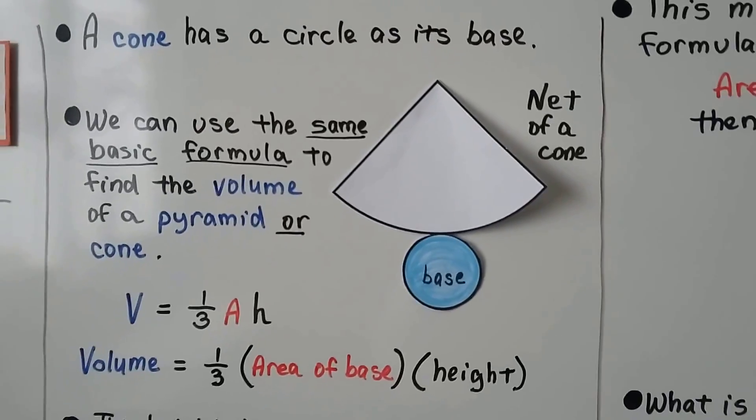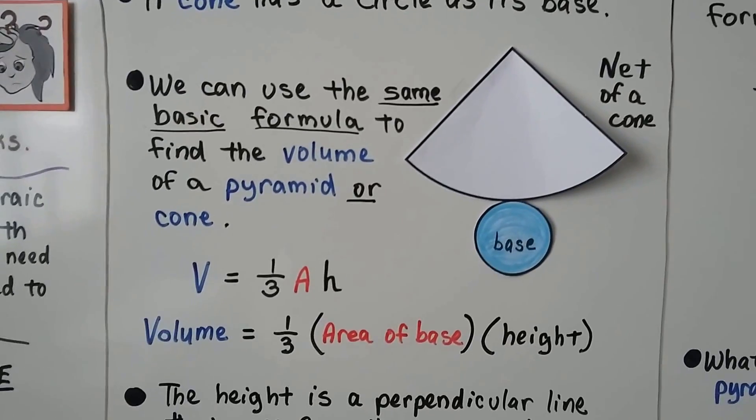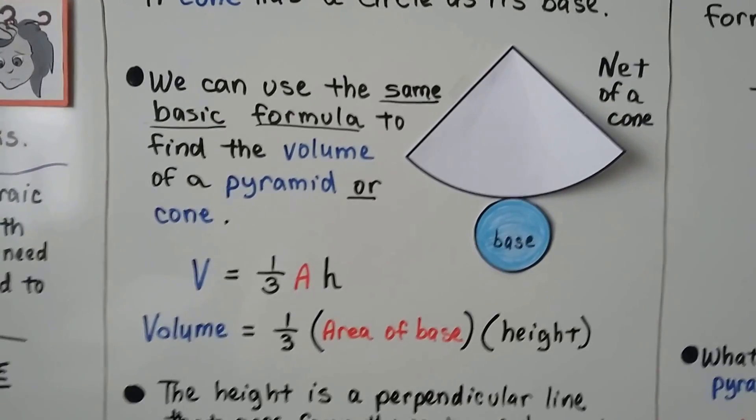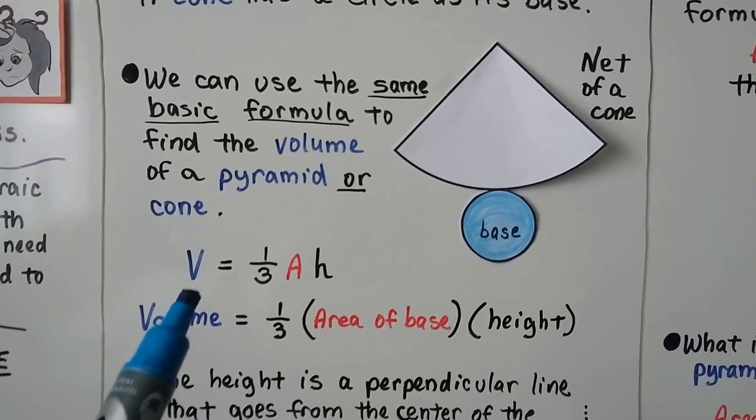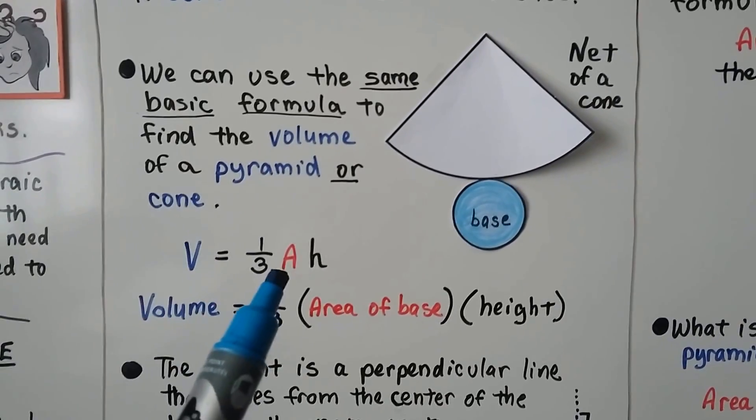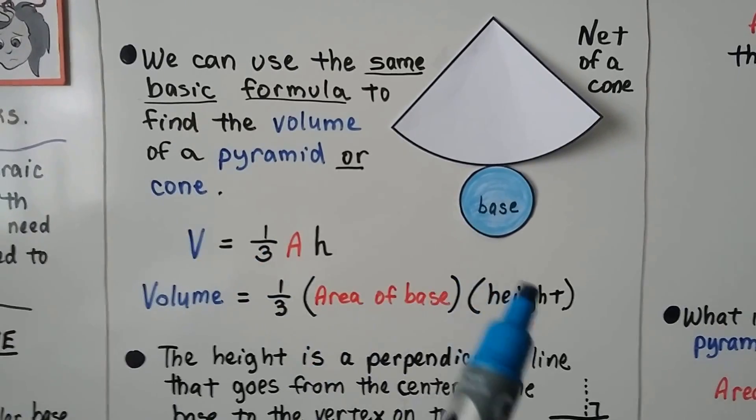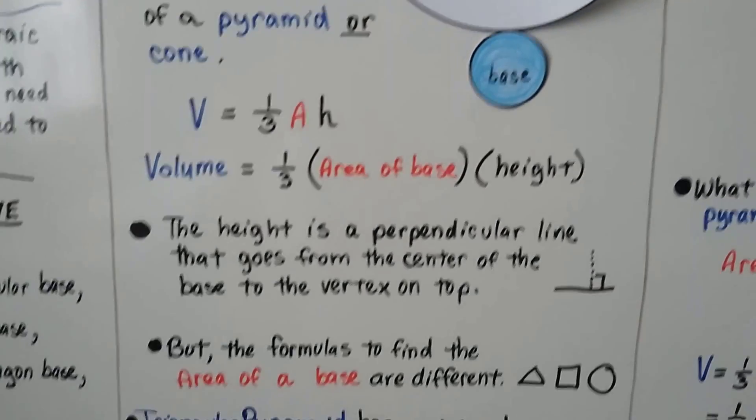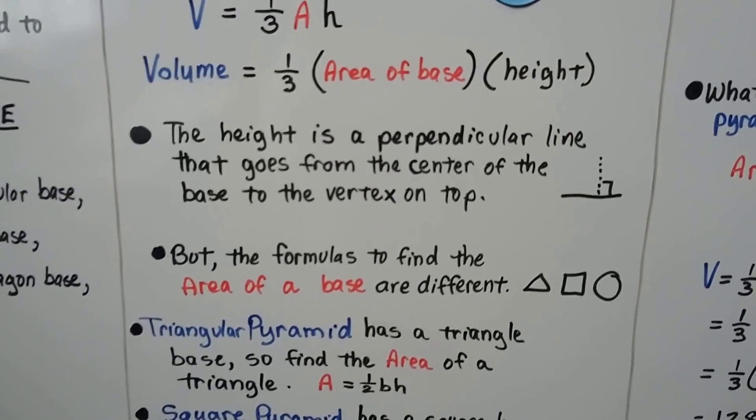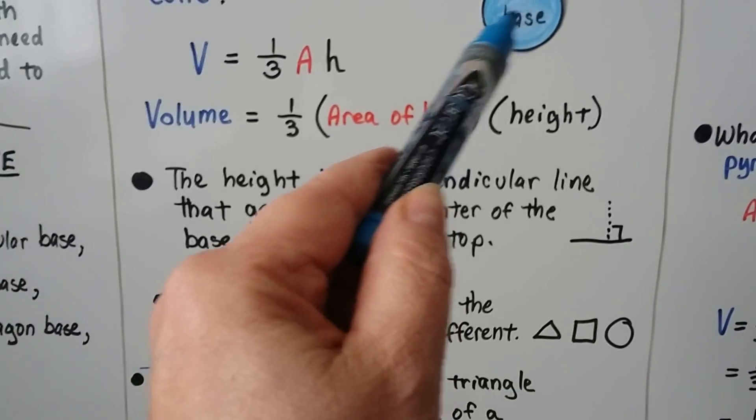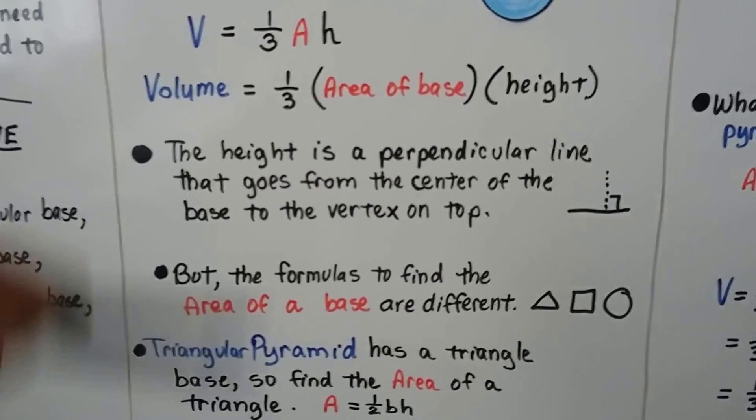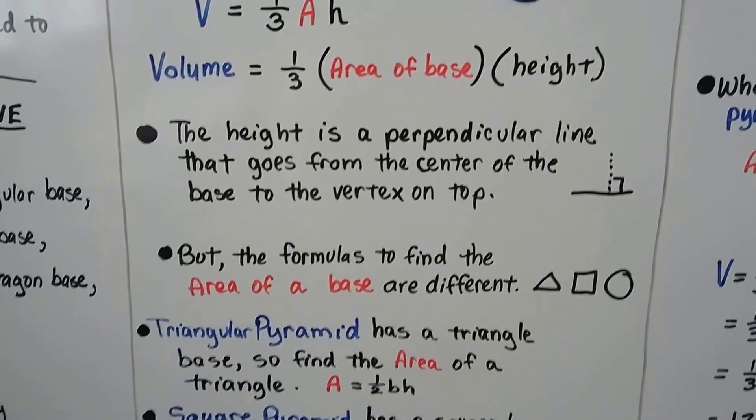We can use the same basic formula to find the volume of a pyramid or a cone. It's the same formula for both. We have V equals one-third AH. That means we're going to multiply the area of the base, that's the A, times the height. And the height is that perpendicular line that goes from the center of the base straight up to the top to the vertex.